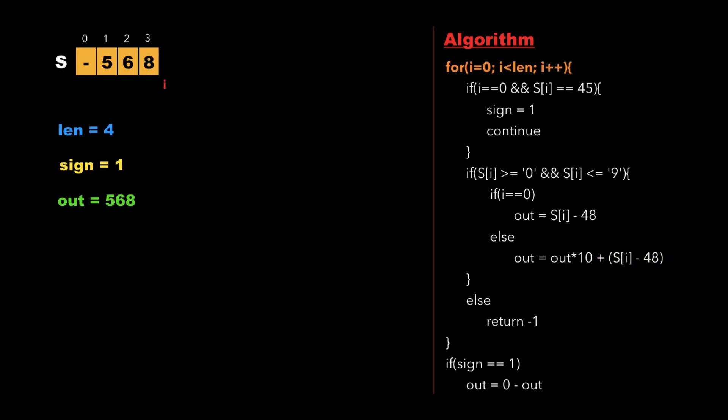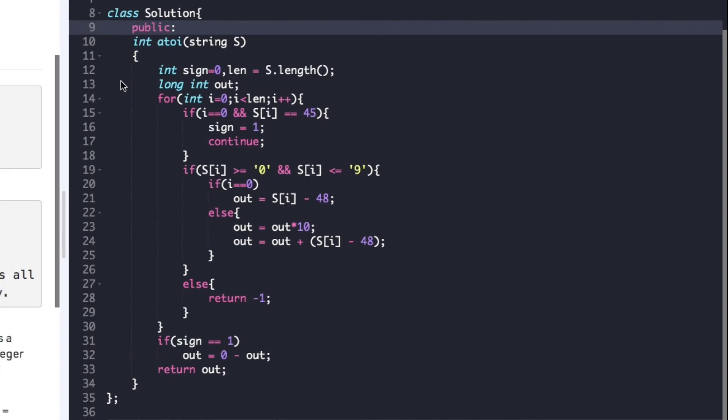i increments to index 4, which is beyond the string boundary, so we exit the for loop. We then check whether sign equals 1 — in our case it is 1, so we update out as 0 minus out, giving the final value of out as minus 568. We return out.